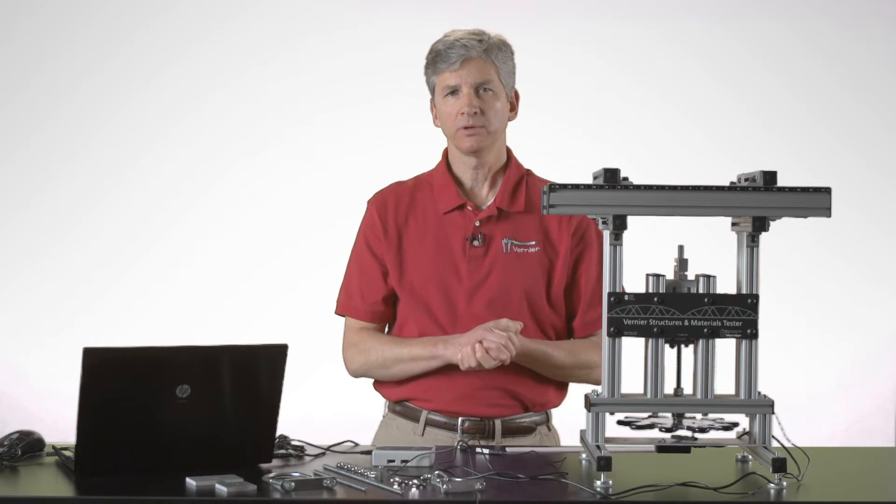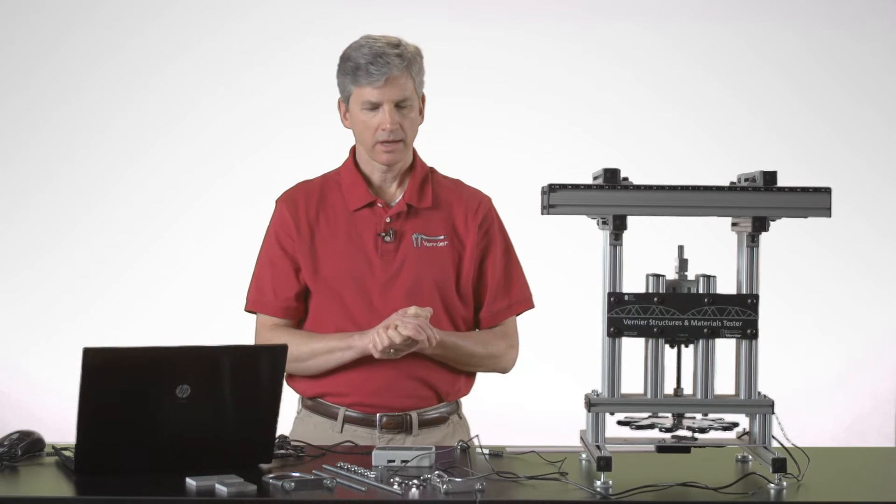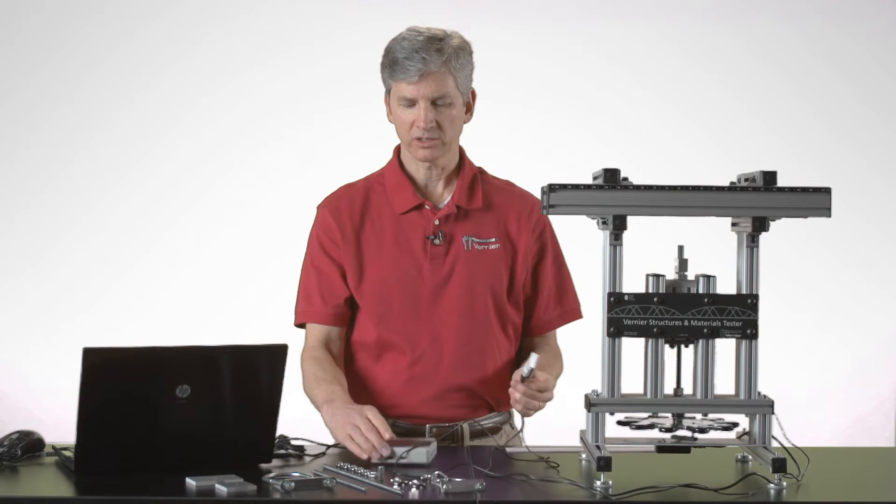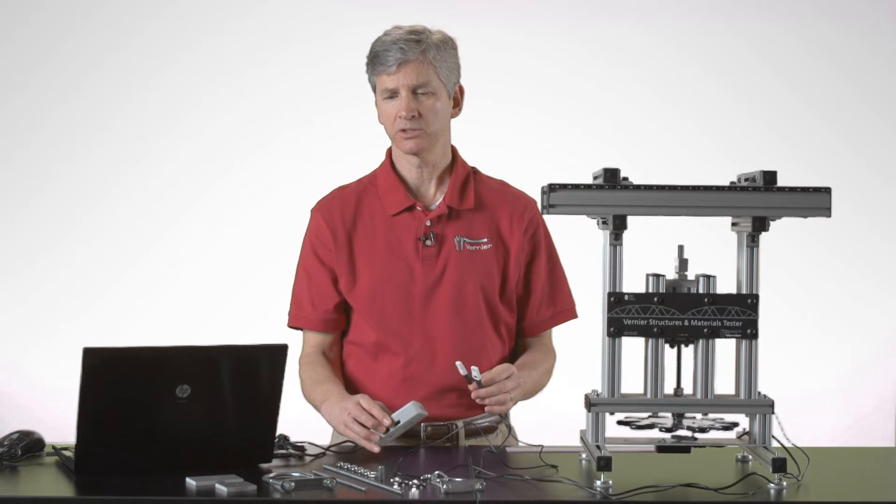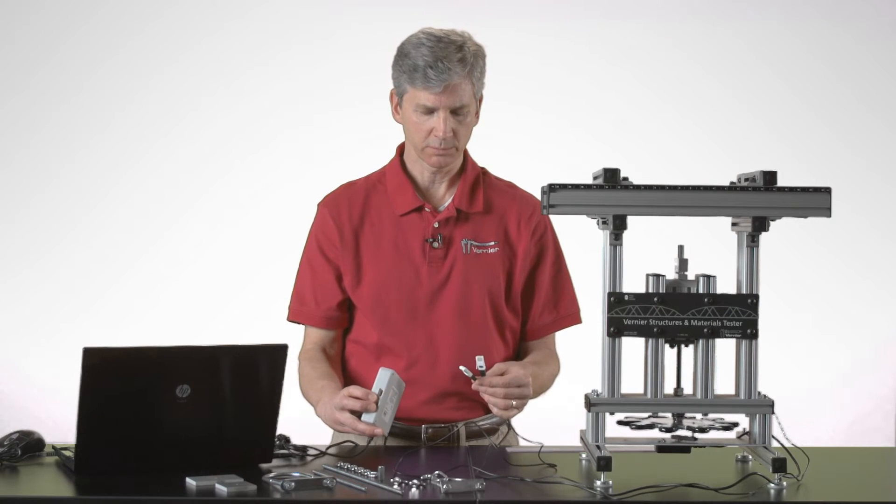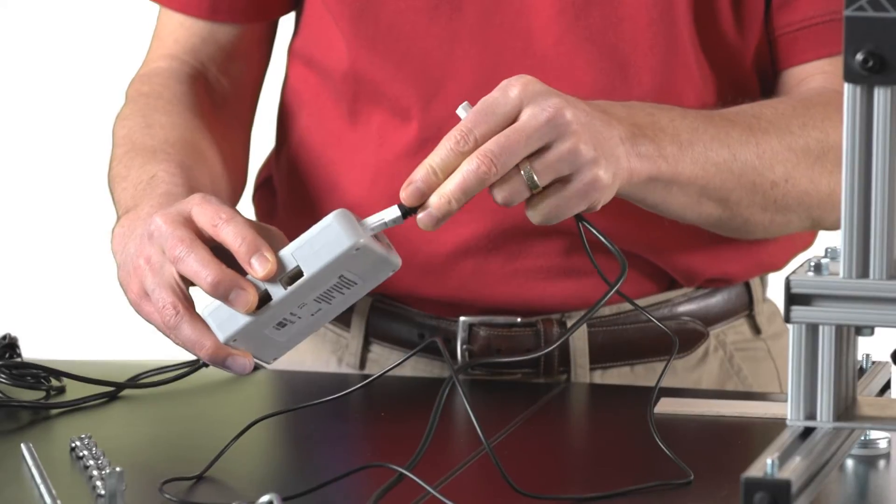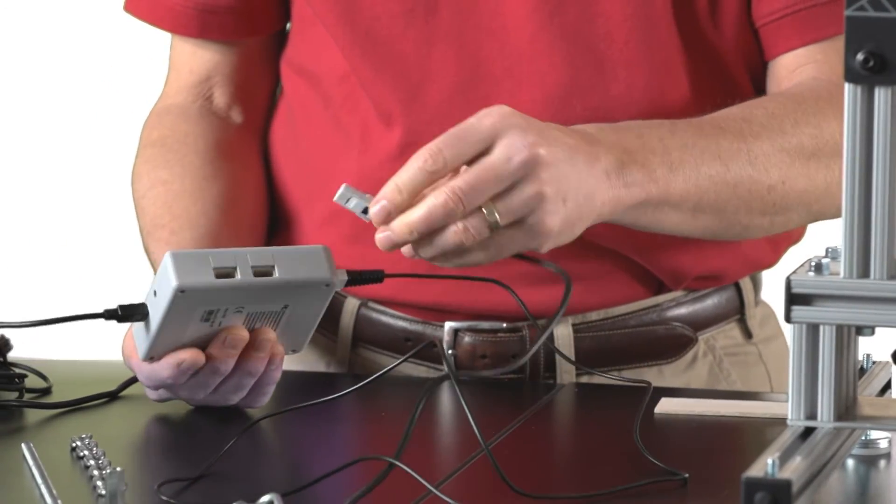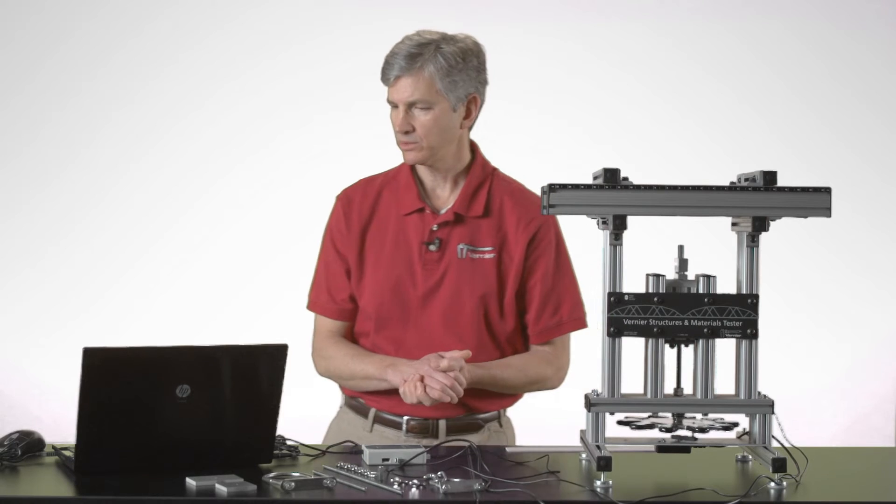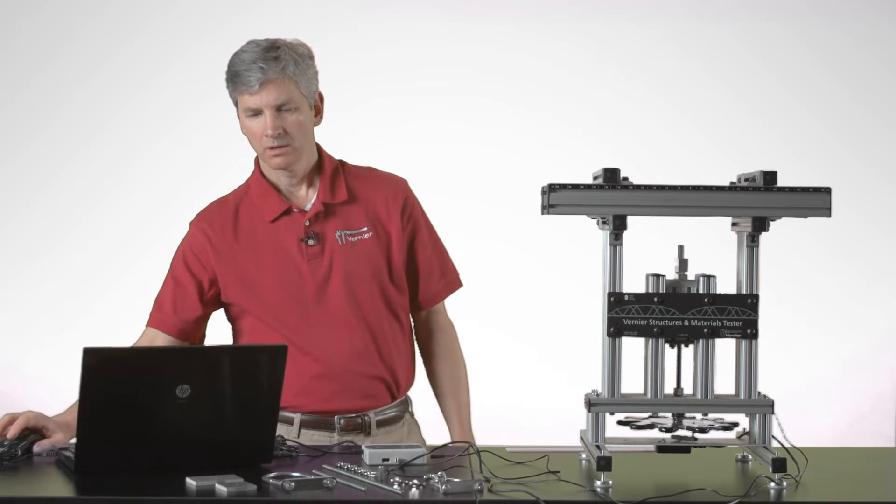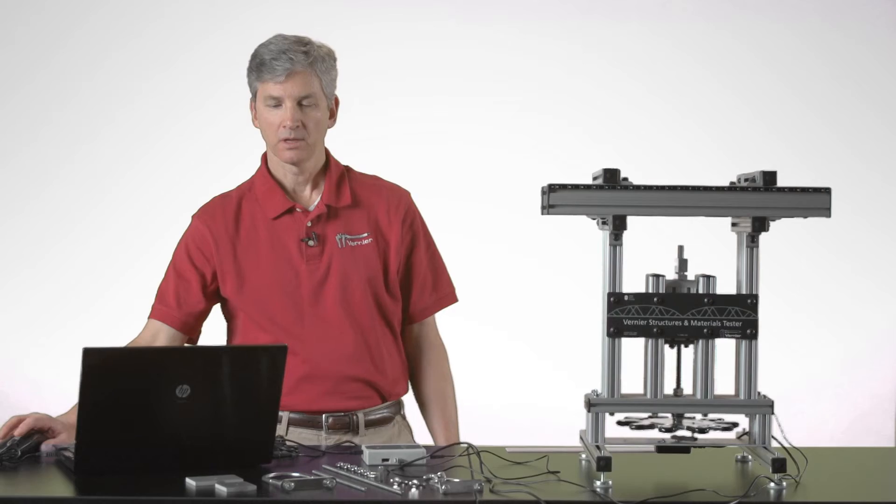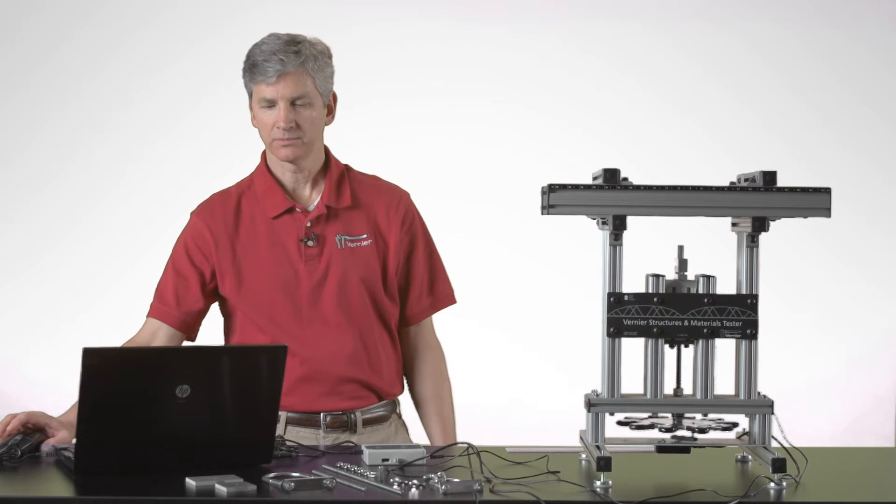I have an experiment file opened in Logger Pro. And I guess at this time it would be appropriate for me to connect the sensors to LabQuest Mini. You could plug it into a LabQuest Mini, LabQuest or LabQuest 2, or a LabPro. All of those interfaces would be appropriate. Let's see, we need the force sensor in an analog port and we need the displacement sensor in the digital port. And then I have this connected to Logger Pro on the computer.